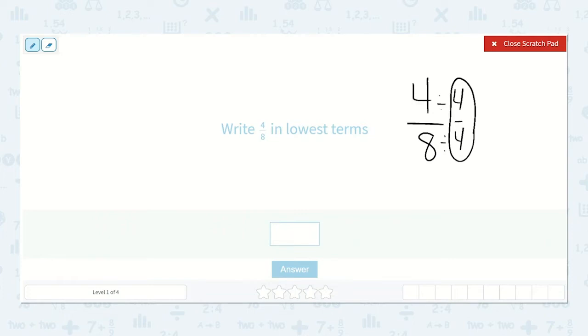Again, it still has the same value. 4 divided by 4 is 1, and 8 divided by 4 is 2. So 4 eighths is the same as 1 half.